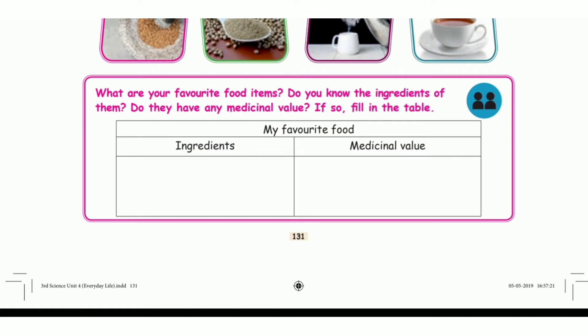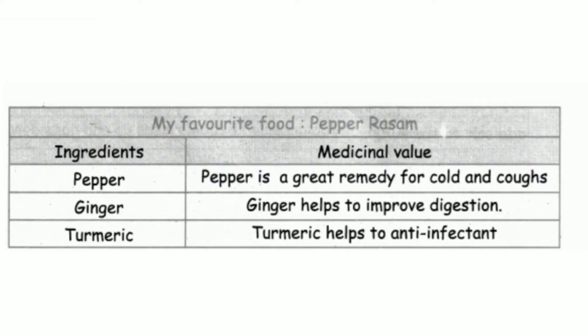What are your favorite food types? Do you know the ingredients of them? Do they have any medicinal value? Fill in the table. My favorite food is pepper rasam. Ingredients and medicinal value: pepper is a great remedy for cold and cough. Ginger helps to improve digestion. Turmeric helps as an anti-inflammatory.